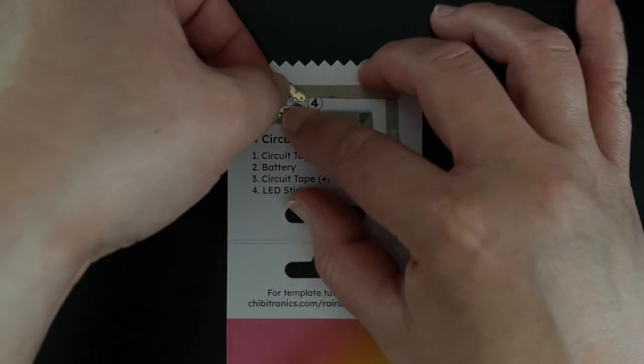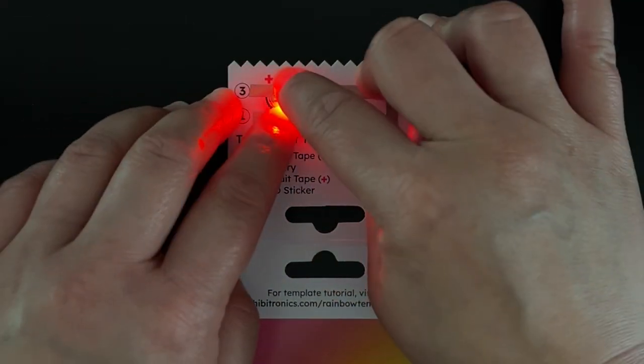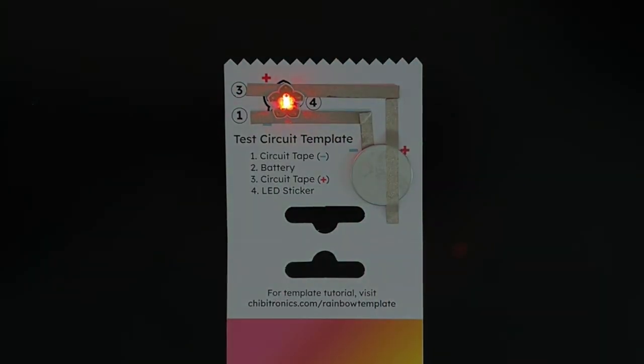Finally, apply the flower-shaped sticker over the sticker outline. Make sure that the larger 3-petal positive side of the sticker covers the red positive line of tape, and the smaller 2-petal negative side covers the blue negative line of tape. Press firmly to adhere and watch the sticker come to life.